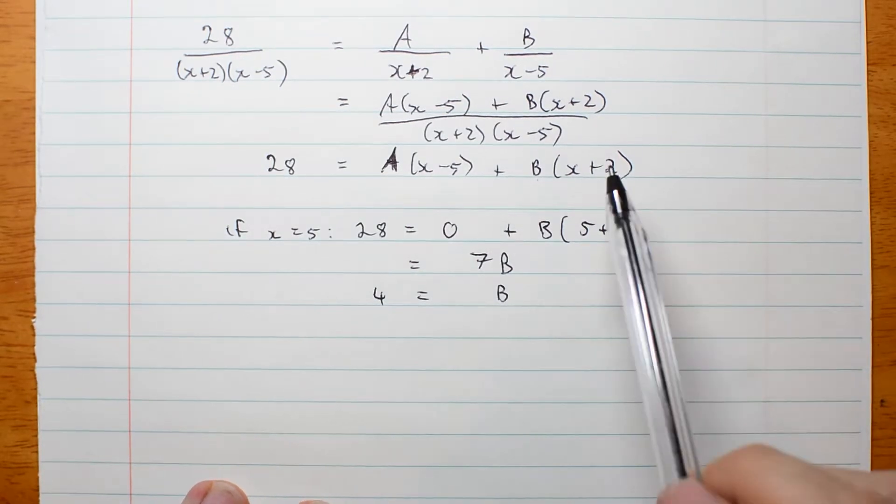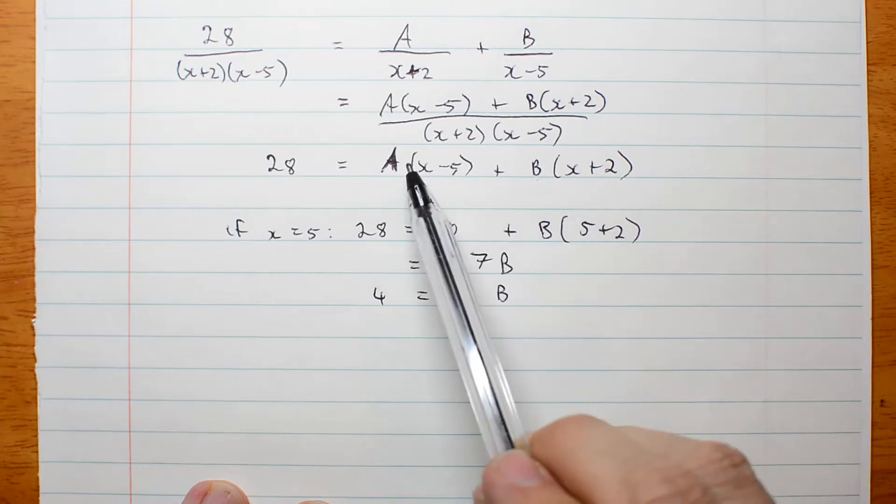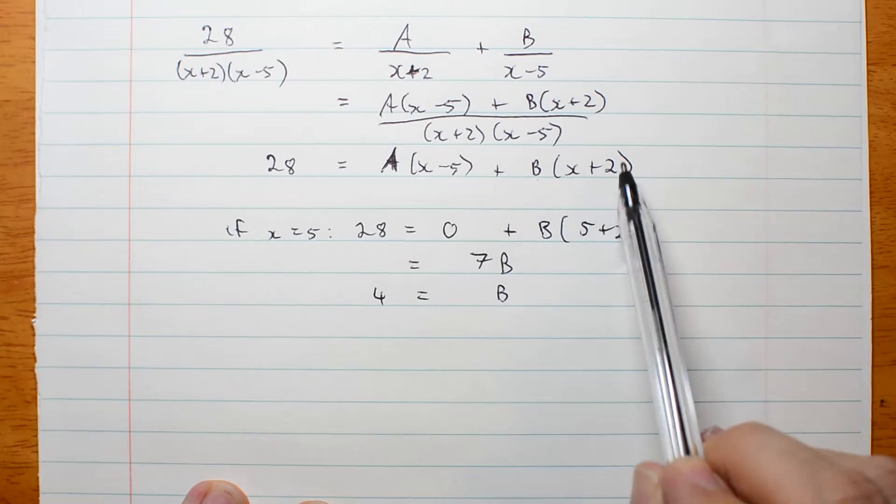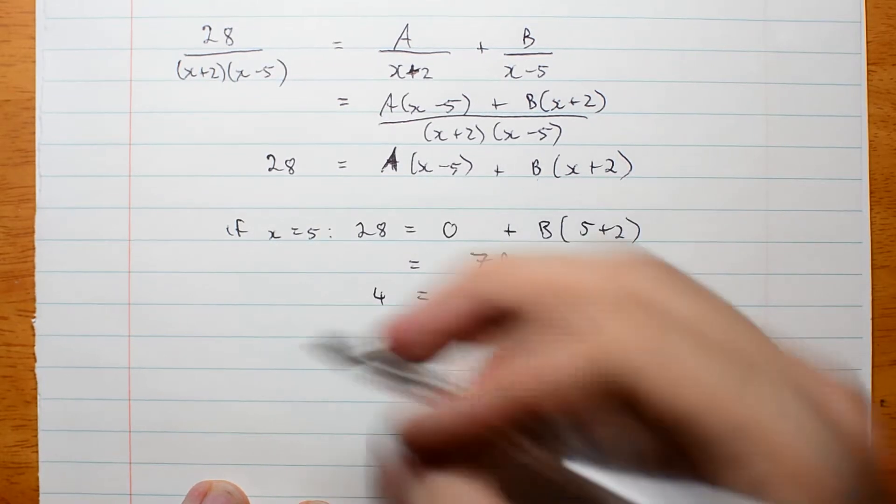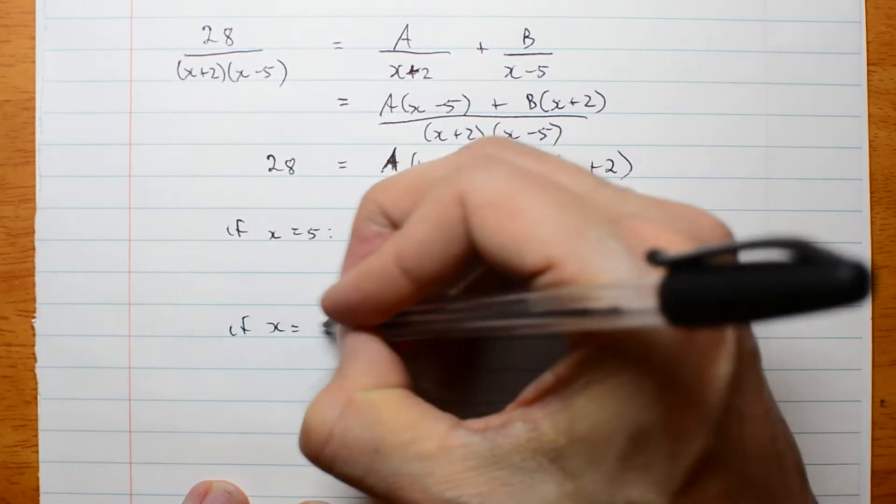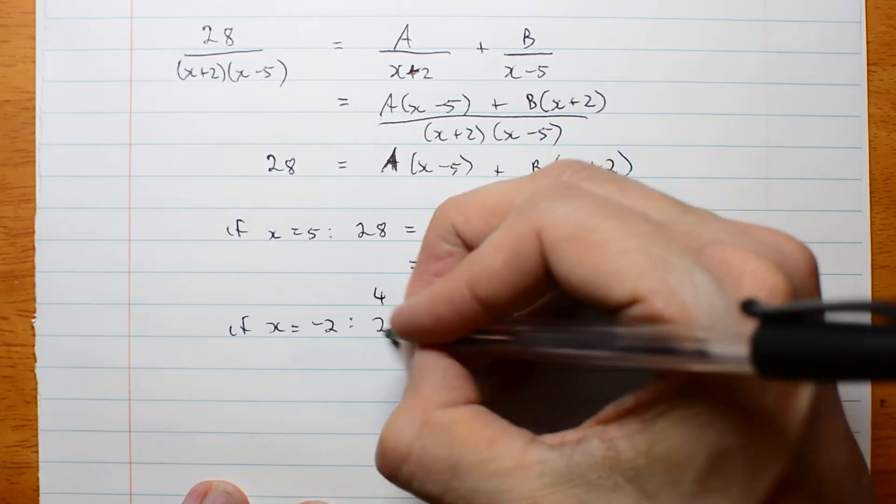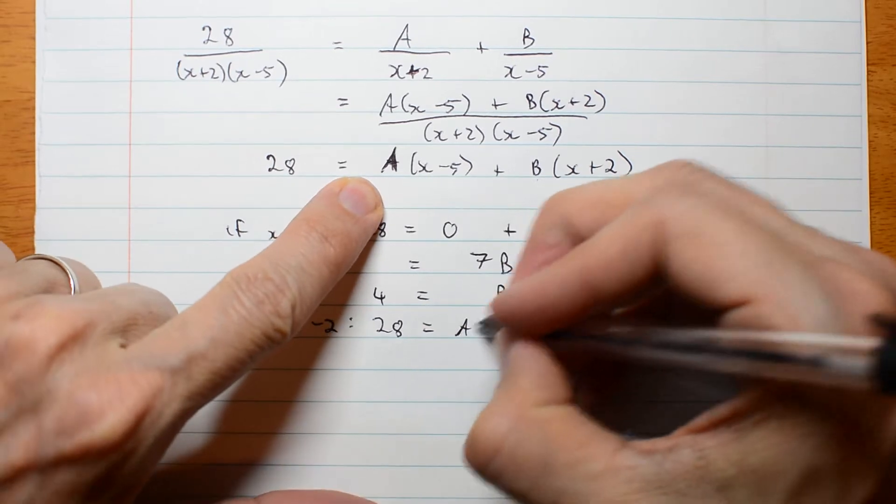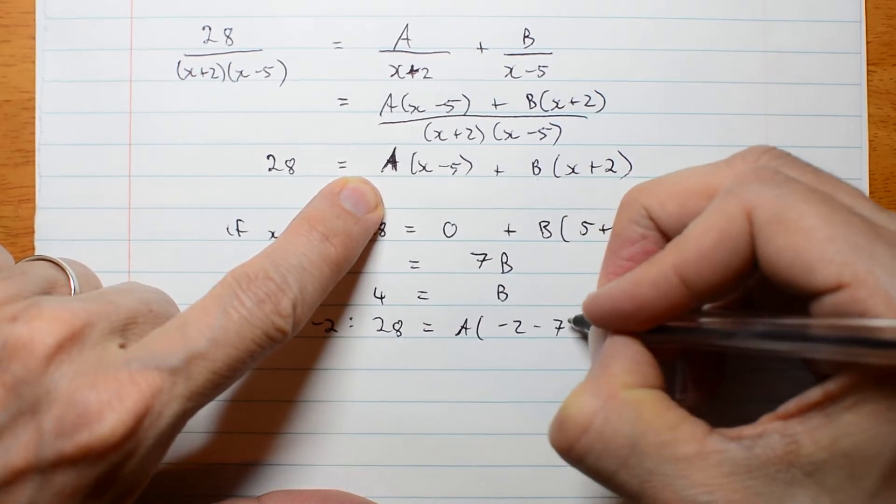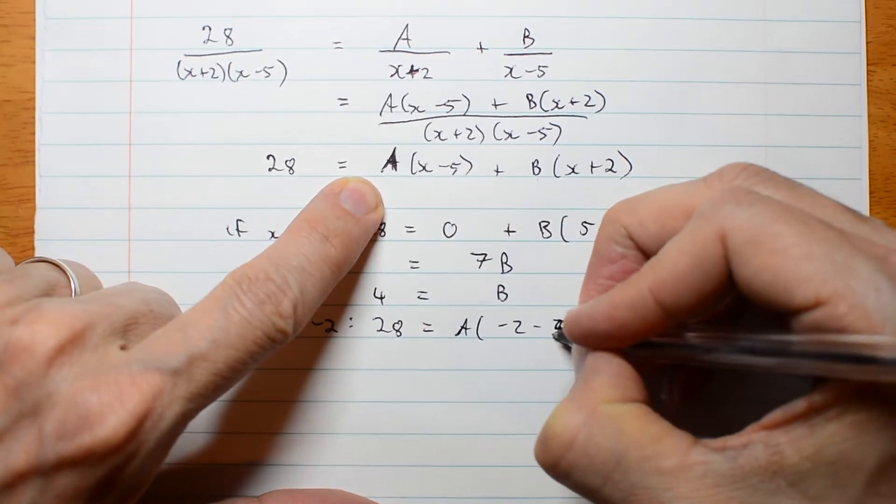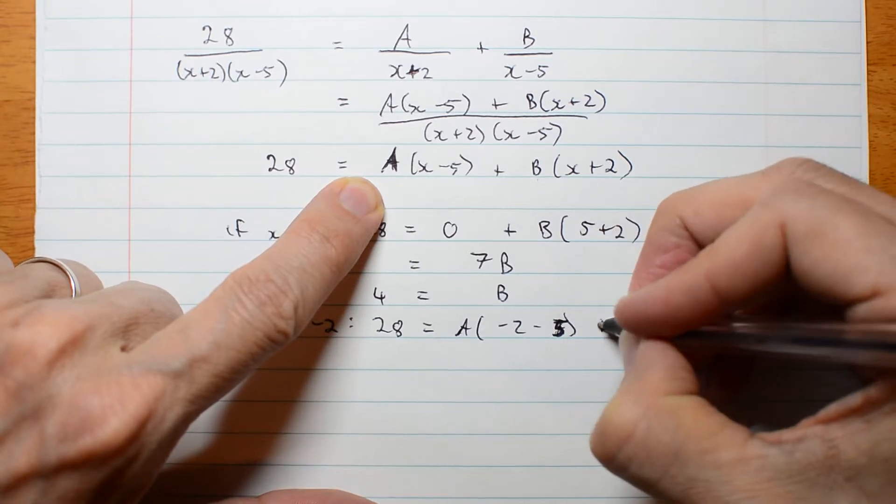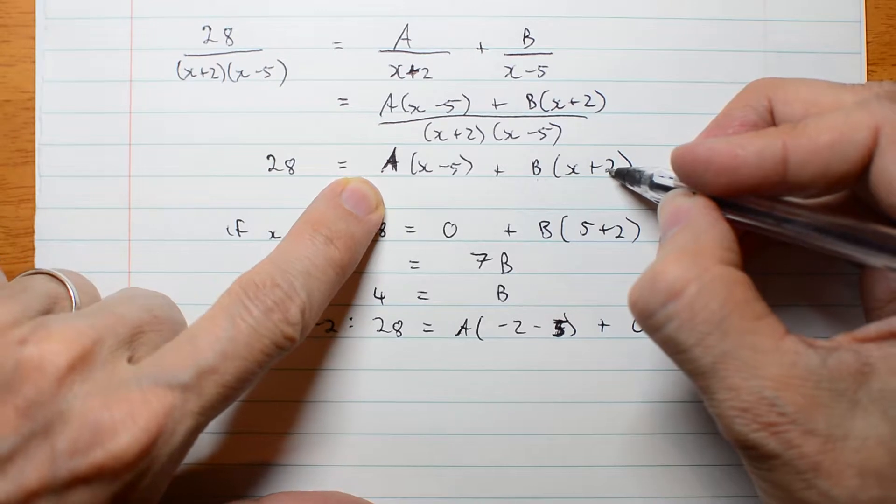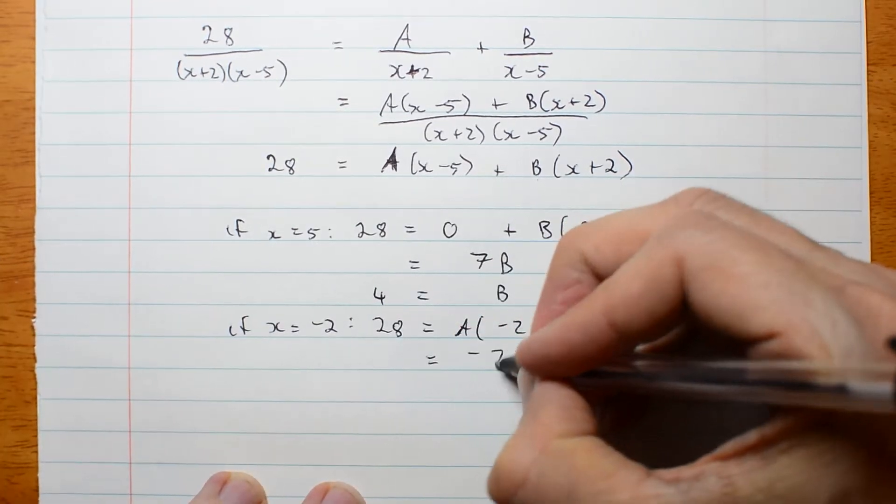Okay, how do I eliminate b now so I can solve for a? Well, I need to make x equal to negative 2 to get rid of this term. If x is negative 2, then 28 must equal a times negative 2, take 5. Sorry, take 5. I'm a step ahead of myself, plus 0 because x was negative 2, which is negative 7a.